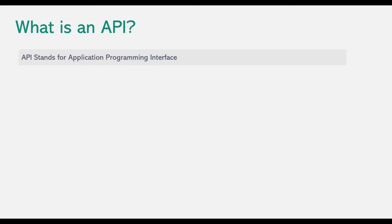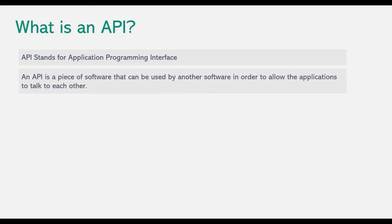An API stands for Application Programming Interface. An API can be of different types like DOM API, Web API, etc. On a very high level, an API is a piece of software that can be used by another piece of software in order to allow applications to talk to each other. With the help of an API, two softwares can talk to each other.